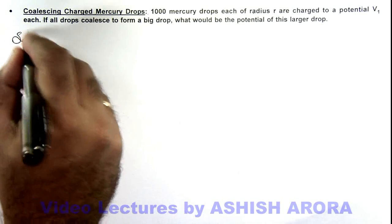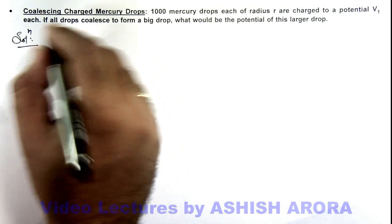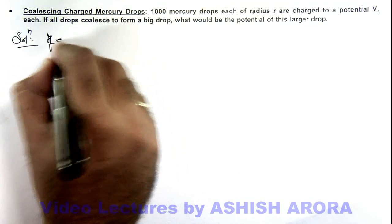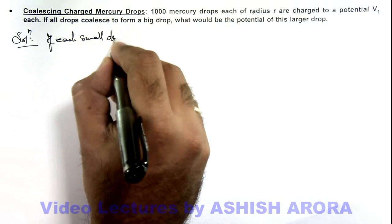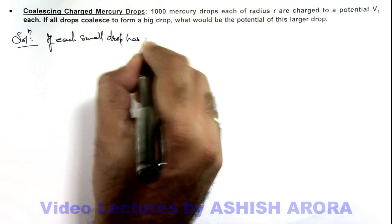So in this situation, we can write: if each small drop has a charge q, we can use the value of V₁.